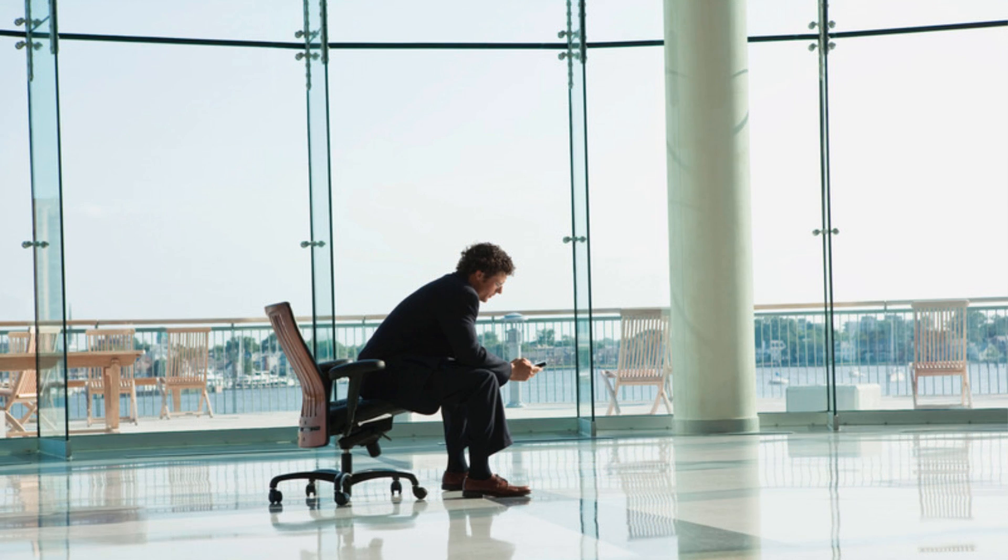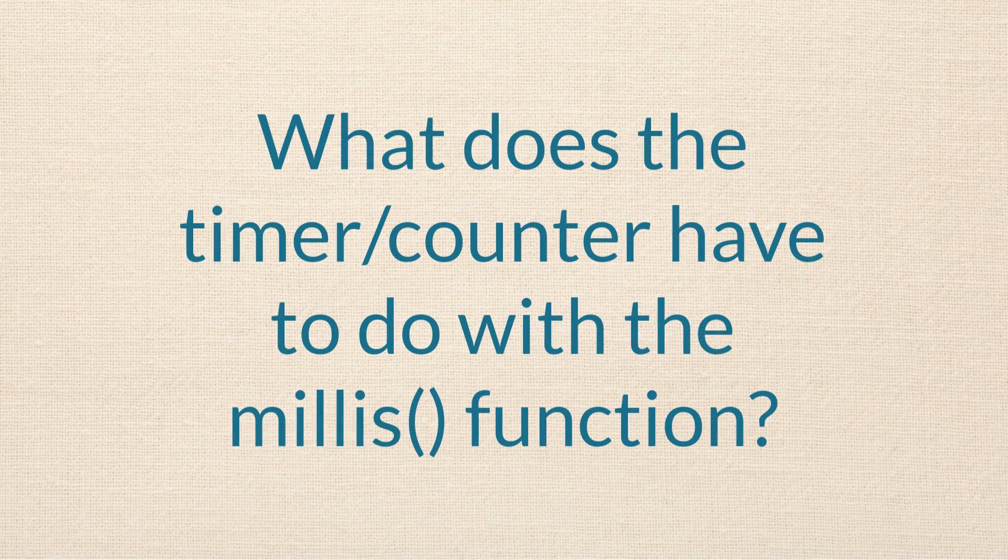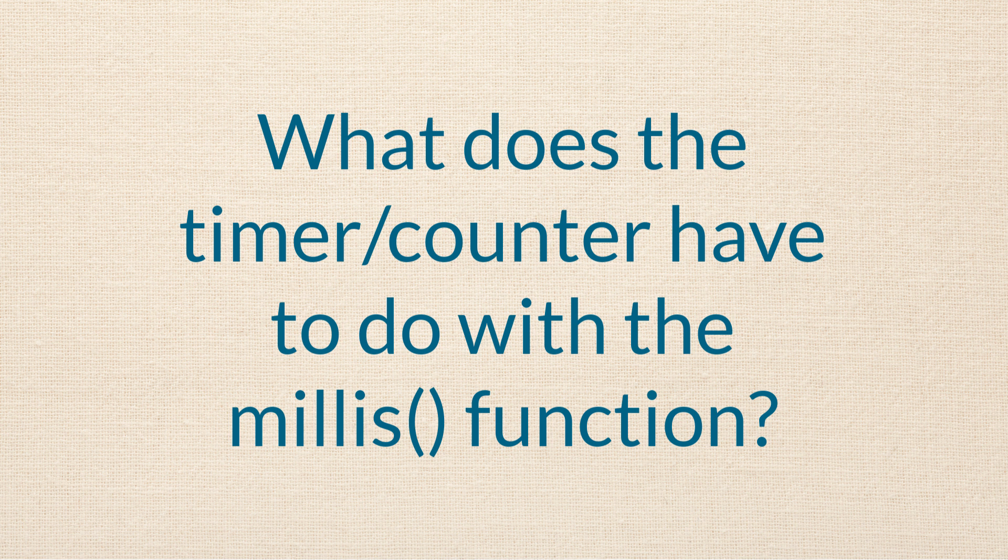Once I sat and waited for 49 days to see if I could see the timer roll over. For 49 days I didn't eat or drink except coffee and donuts and crab cakes with really delicious seafood sauce. But anyway, what does this timer and counter stuff have to do with the Arduino millis function?